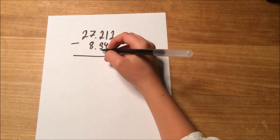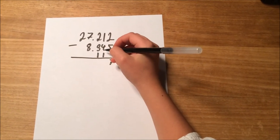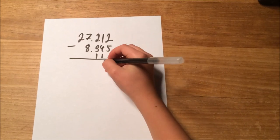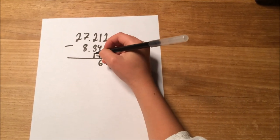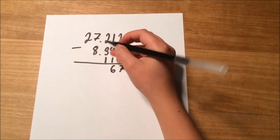And then 5 to 1 doesn't work, so you'd have to note another 10 here, which would then be 5 to 11, which would be 6. And then you'd add the 10 to the 3, so 4 to 2 doesn't work.